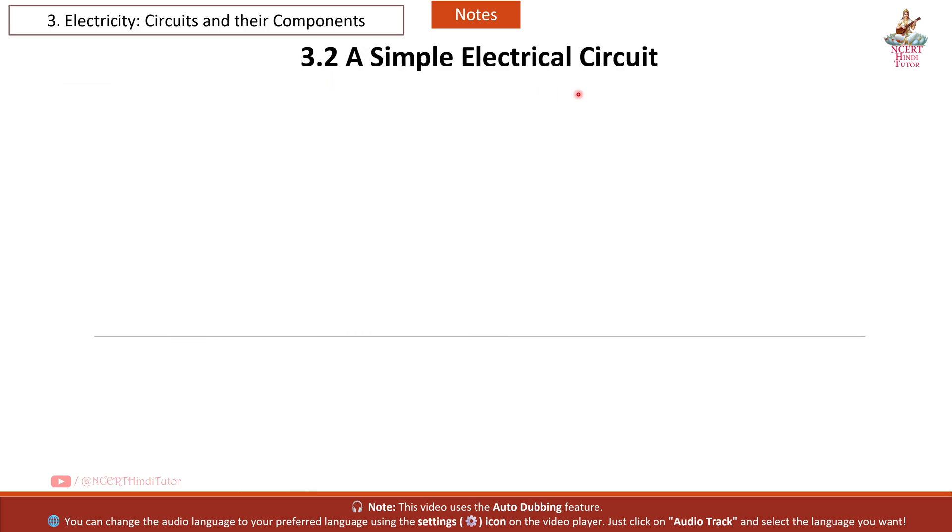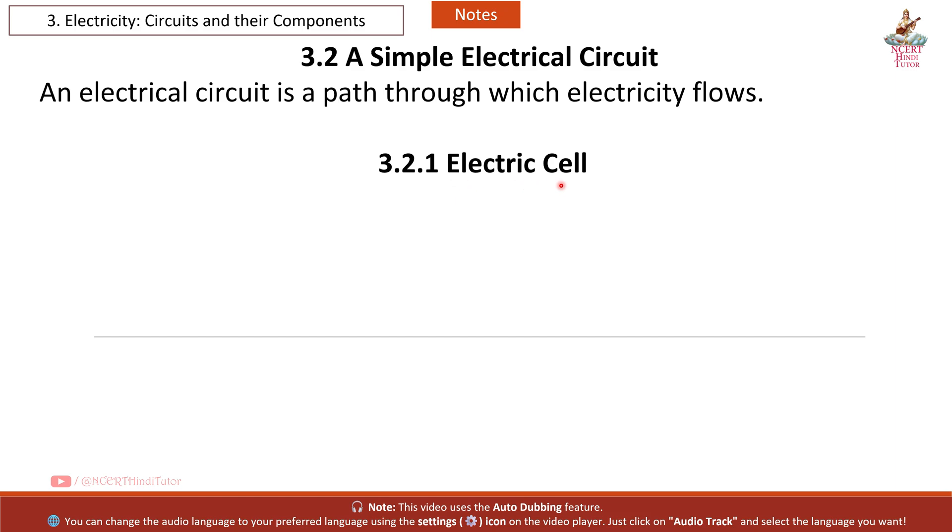3.2 A Simple Electrical Circuit. An electrical circuit is a path through which electricity flows. 3.2.1 Electric Cell. It has two terminals: positive (plus) and negative (minus).